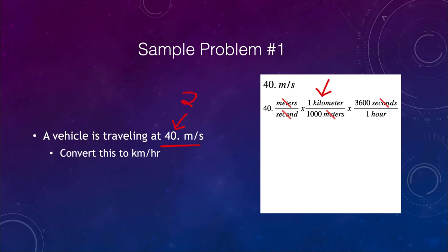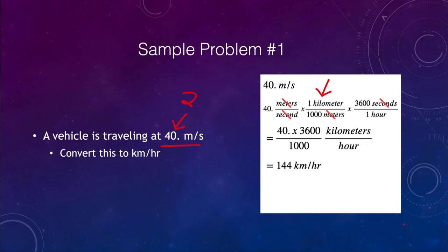Now, as we work, we need to do the calculation. We take 40 times 3600 divided by 1000, and that will give us our answer in kilometers per hour. When we do that calculation, we find that we would have 144 kilometers per hour.